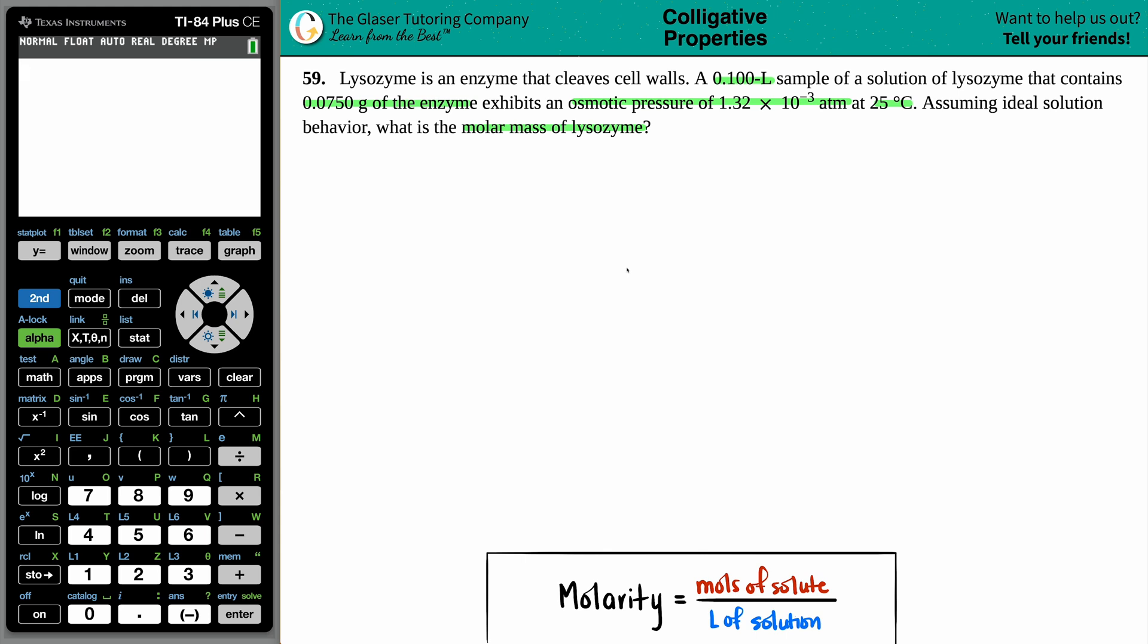Assuming ideal solution behavior, what is the molar mass of the lysozyme? Okay, so they're dropping a lot of numbers here. They gave us 0.100 liters, a gram sample of this lysozyme. They give me an osmotic pressure and they're asking for the molar mass. So let's see, what is my general formula for molar mass?